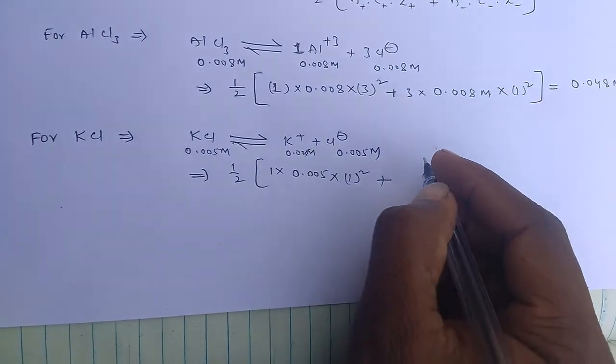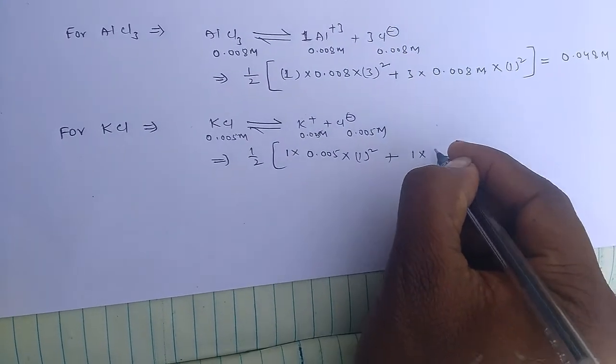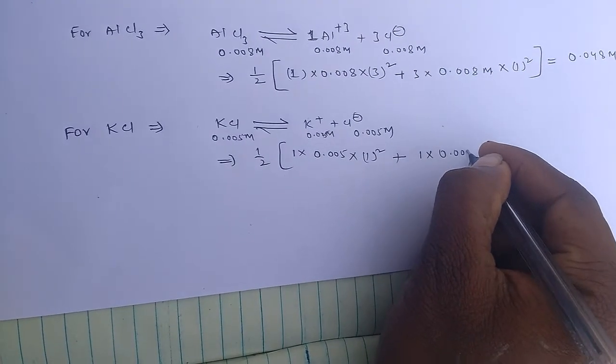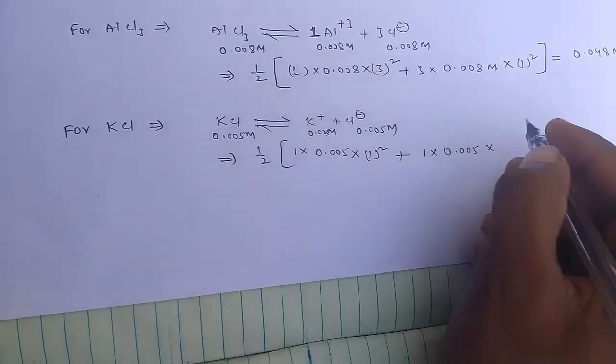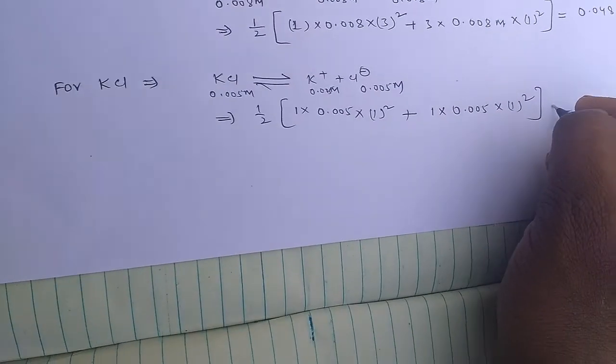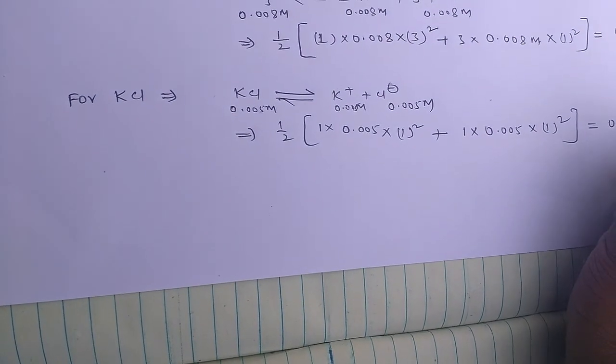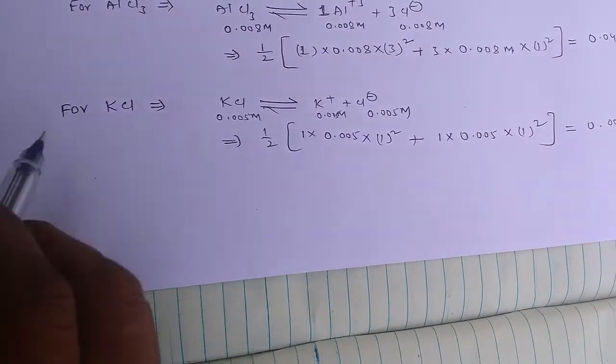If you calculate for anion, number of anions are 1 into concentration is 0.005 into anions is 1, 1 square. By solving this, we can get 0.005 M concentration.